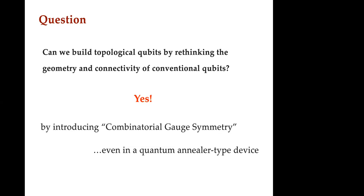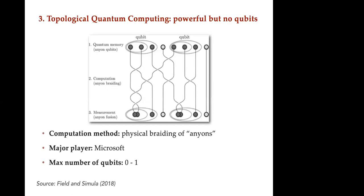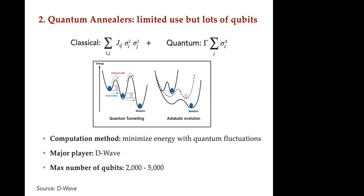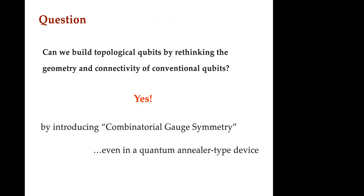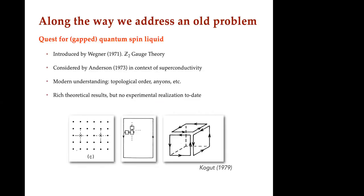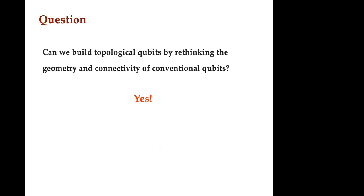Can we actually build topological qubits by rethinking the geometry and connectivity of conventional qubits — all those different flavors made out of Josephson junctions? Can we put those together, connect them, arrange them to build some sort of topological state? It turns out that what you have to do for it is what we're calling combinatorial gauge symmetry — the mathematical structure that underlies this. It's relatively simple once you see it.